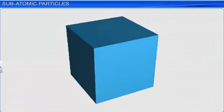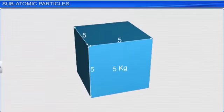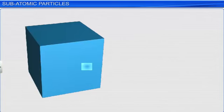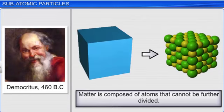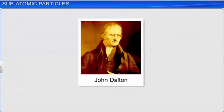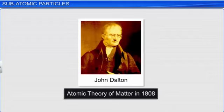Any substance that has mass and occupies space is called matter. It is made up of small particles called atoms that cannot be further divided. This idea was first proposed by the Greek philosopher Democritus back in 460 BC. However, due to the lack of scientific evidence, Democritus' ideas were considered mere speculations and ignored for 2000 years, until John Dalton proposed the atomic theory of matter in 1808.